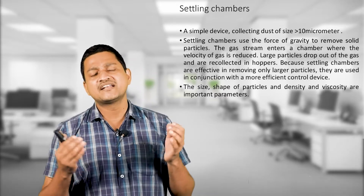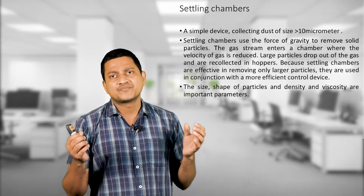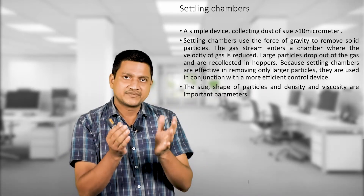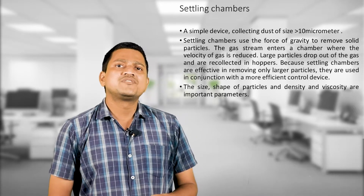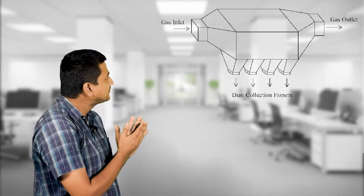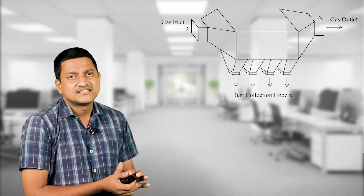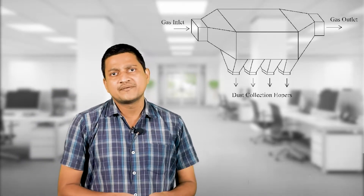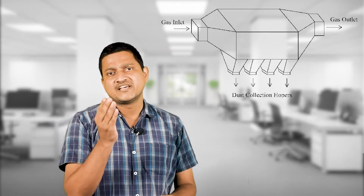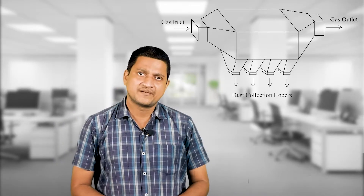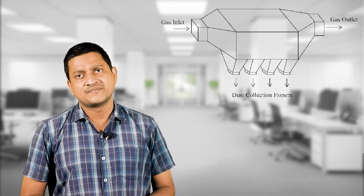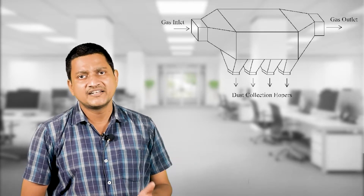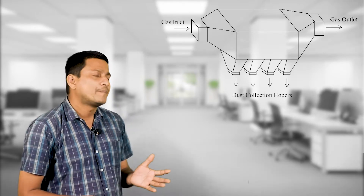The settling chamber collects particles based on gravity force. Looking at the diagram, there is a dust-collecting hopper, a gas inlet, a gas outlet, and dust collection hoppers at the bottom.